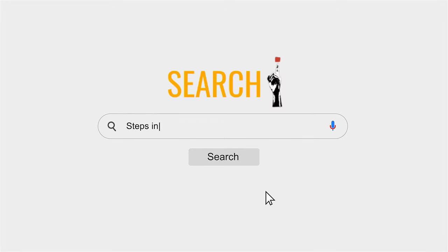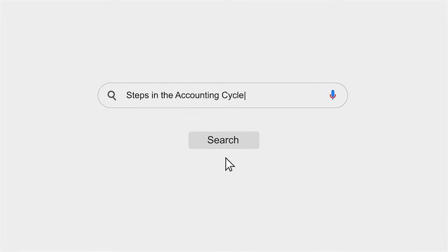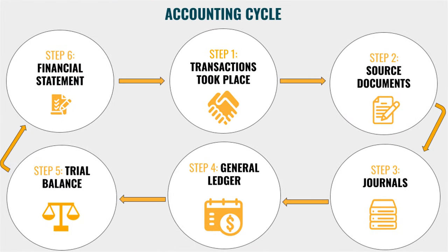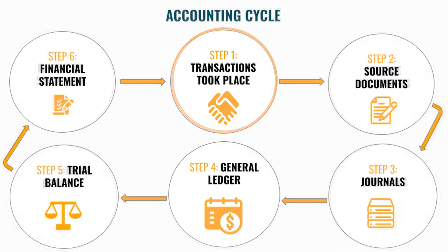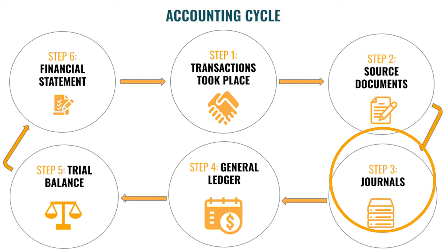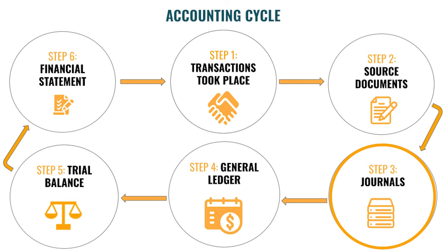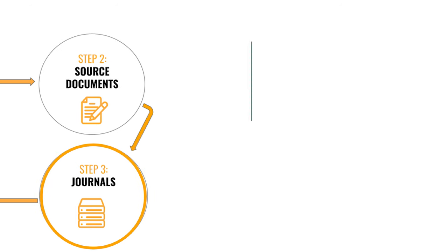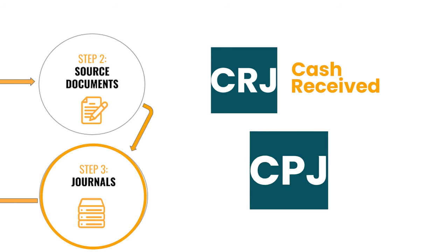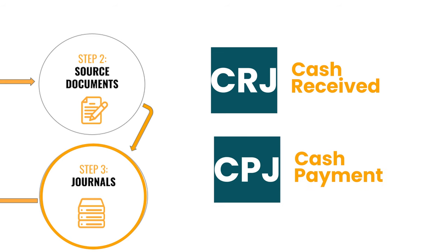Let's look at the different steps of the Accounting Cycle. Step 1: The transaction takes place. Step 2: The transaction is recorded on a source document. Step 3: These documents are recorded in the cash journals, namely the Cash Received Journal and the Cash Payment Journal — for short, CRJ or CPJ.